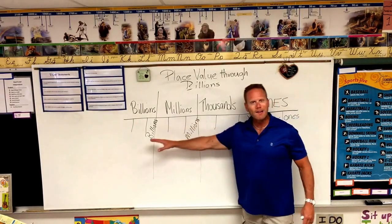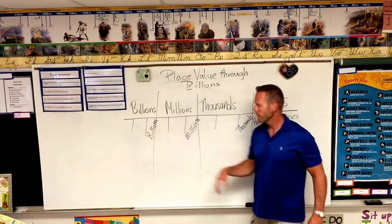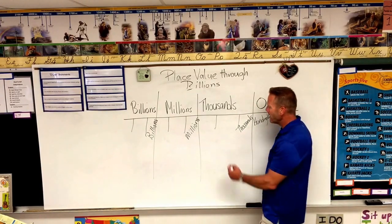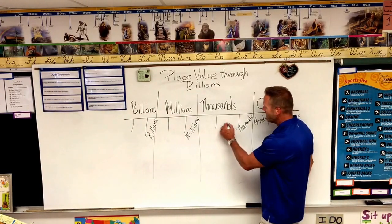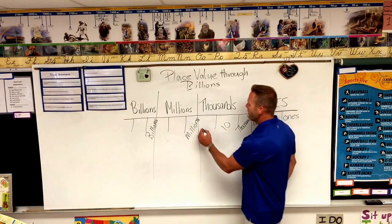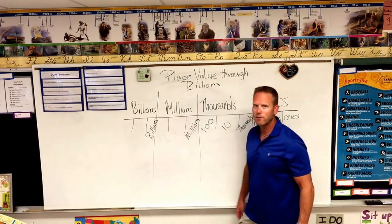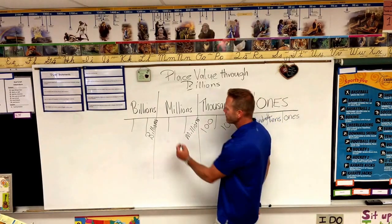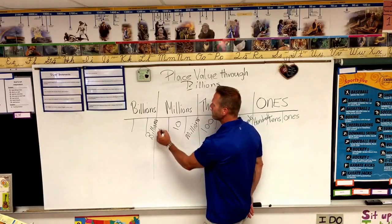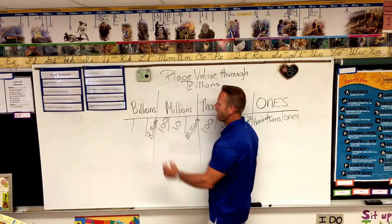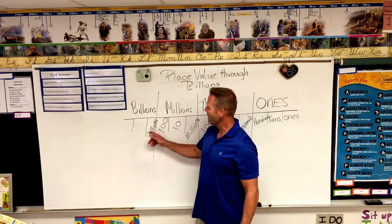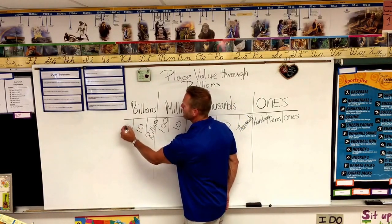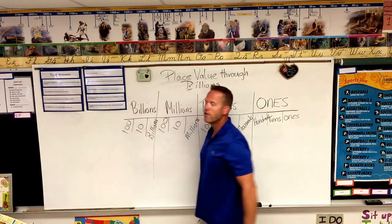Now, the rest of them are really simple. Because in the thousands, the next category would be the ten thousands, and then the hundred thousands. And the millions, same thing — we have our ten millions and our hundred millions, and then finally the billions. We have our ten billions and our hundred billions.